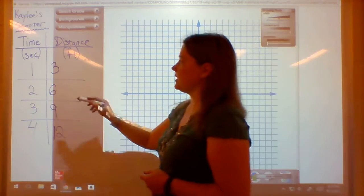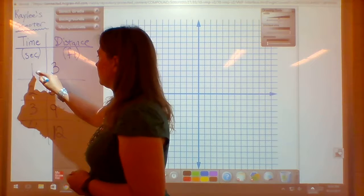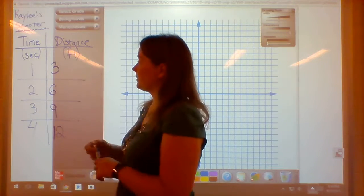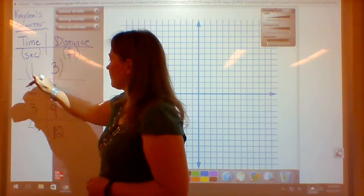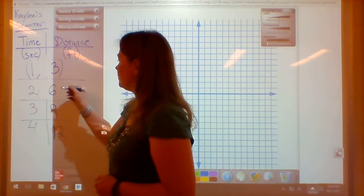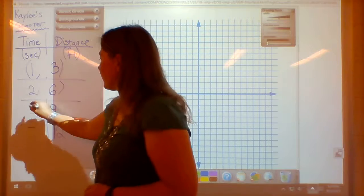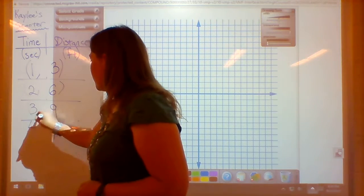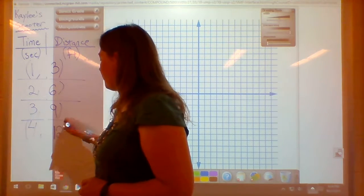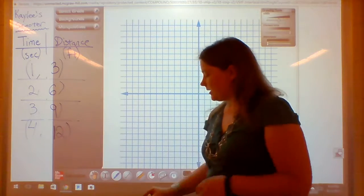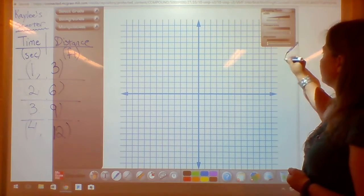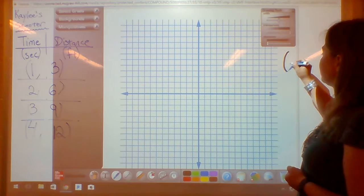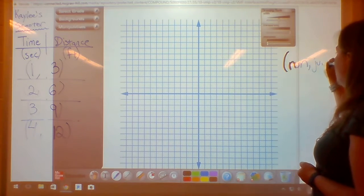So all of these over here are actually ordered pairs: 1, 3, 2, 6, 3, 9, and 4, 12. And I like to think of ordered pairs as directions. They always say run, jump.